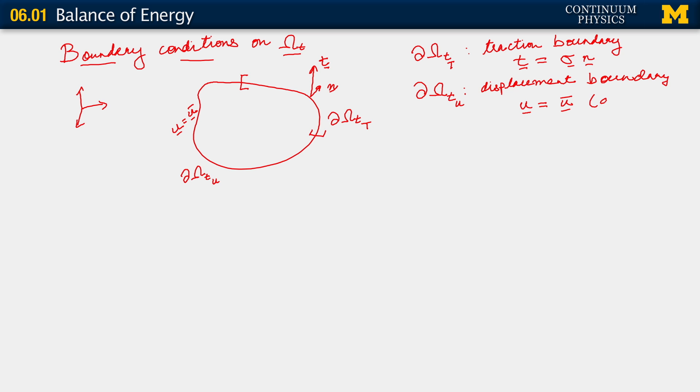So this is given. Likewise here, the traction condition, what is given to us is t. What we have to determine is sigma. On the displacement boundary, what's given to us is u bar, whereas u is the field that we're trying to determine inside the body.